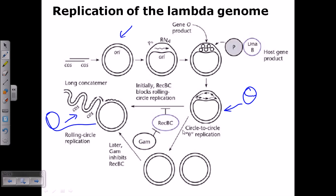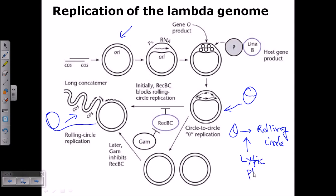When it is necessary to package genomes into progeny viruses during the lytic cycle, it needs to shift from theta mode replication to rolling circle mode replication — theta to rolling circle. For the lytic phase, once the circular DNA has been duplicated, the protein Gam comes into play. Gam inhibits the RecBC protein.